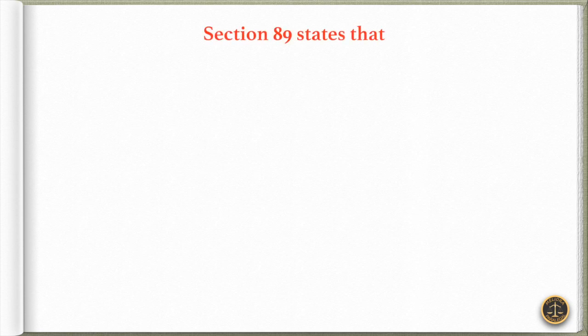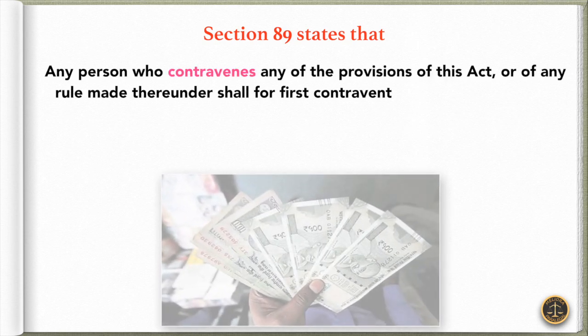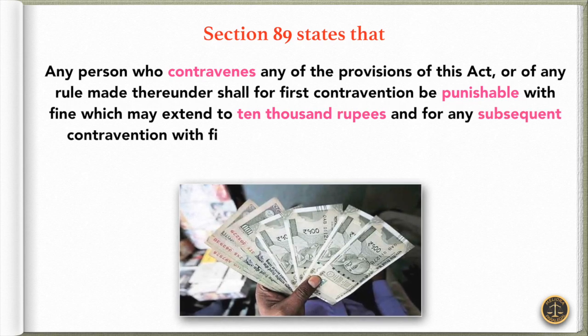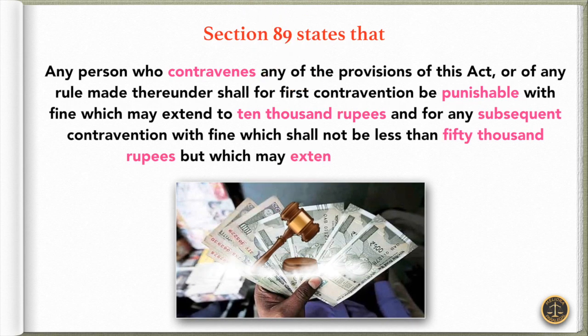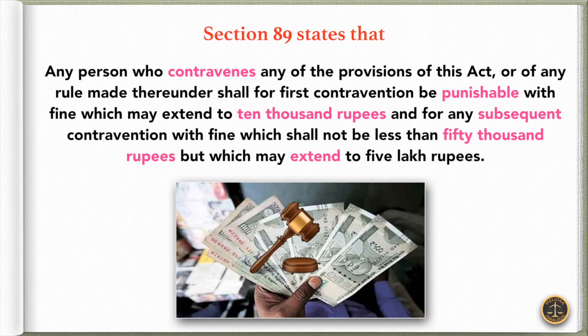Last but not the least, section 89 states that any person who contravenes any of the provisions of this act or of any rule made thereunder shall for the first contravention be punishable with a fine which may extend to 10,000 rupees, and for any subsequent contravention with a fine which shall not be less than 50,000 rupees but which may extend to 5 lakh rupees. This is all about the Rights of Persons with Disabilities Act 2016.